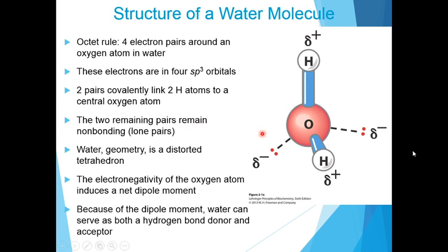The two remaining pairs remain as non-bonding pairs. There are two non-bonding electron pairs in this oxygen atom in a water molecule. As a result, the water molecule has a distorted tetrahedron-like geometry. The electronegativity of the oxygen atom induces a net dipole moment, and that is what is shown as delta plus for hydrogen, both hydrogens and delta minus, towards the electron pair.